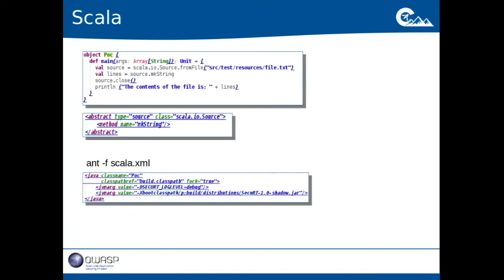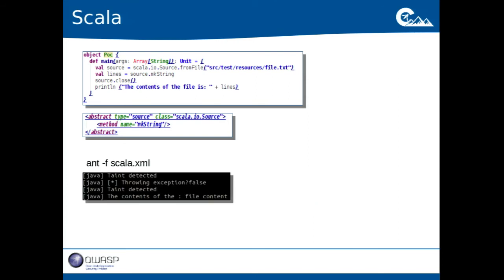Scala is another interesting language with a completely different approach — it's not object-oriented but a functional language. A simple read-from-file, make a String of it, close it, and print it. Fortunately for me, the source was easily defined as the `scala.io.Source` class and its `mkString` method. Again executed through a simple Java invocation, and the taint was detected.